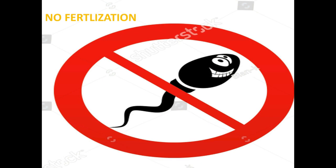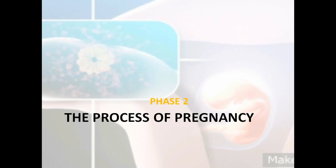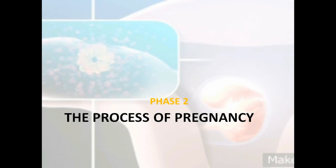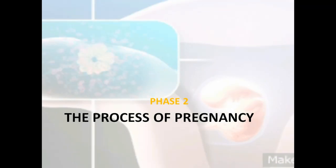The second phase of female reproductive physiology starts with fertilization, and that phase is called pregnancy. These are the stages of development of the fetus, starting from fertilization to the development of a baby in the womb of the mother.